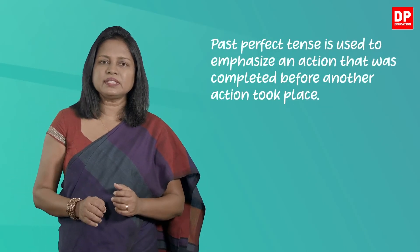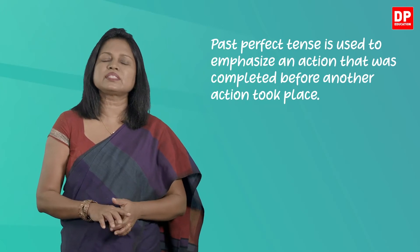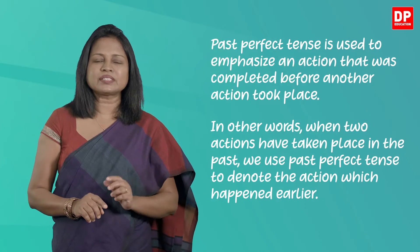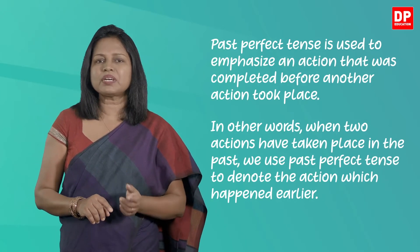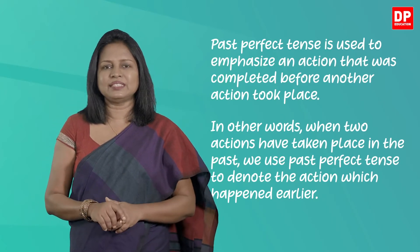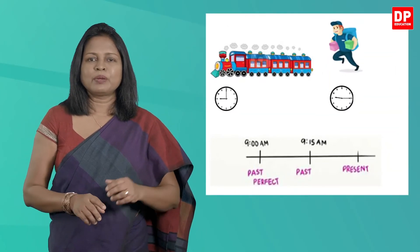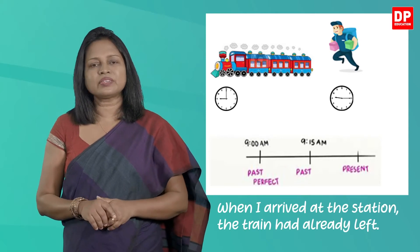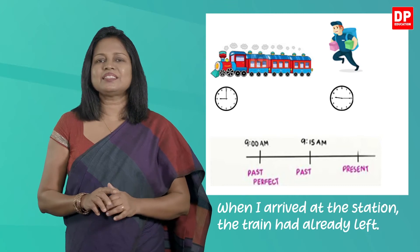Past perfect tense is used to emphasize an action that was completed before another action took place. In other words, when two actions have taken place in the past, we use past perfect tense to denote the action which happened earlier. Look at this situation: when I arrived at the station, the train had already left.